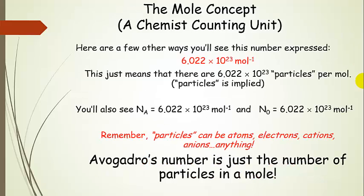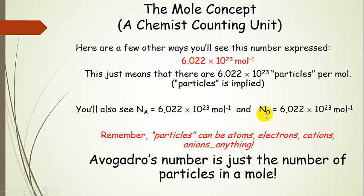Here are a few other ways you'll see this number expressed. 6.022 times 10 to the 23rd with mole inverse — that just means per mole, so particles per mole. Particles can be anything: atoms, electrons, cations, anions. You'll also see it abbreviated as N sub A — it's just 6.022 times 10 to the 23rd particles per mole. You might also see N sub 0, and it means the same thing. Avogadro's number is just the number of particles in a mole, just like 12 is the number of things in a dozen.